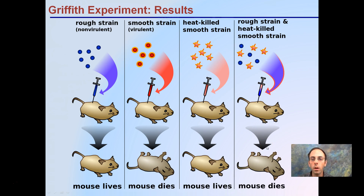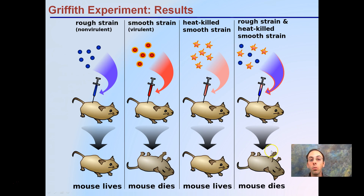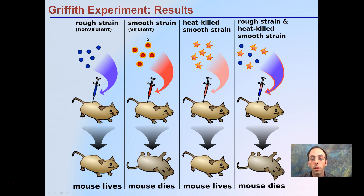What we notice here is a little different. We have two portions that alone did not cause death, and the mouse lived in both those cases, but when combined the mouse dies — a similar result to the virulent smooth strain.